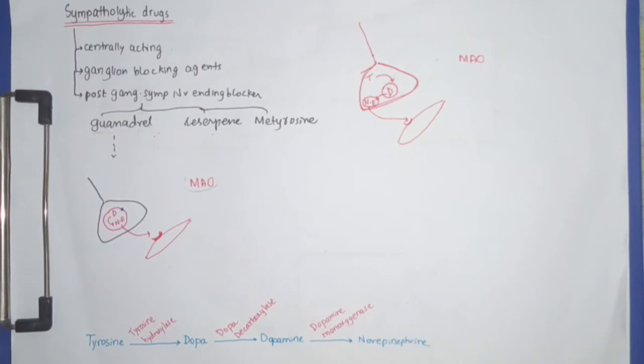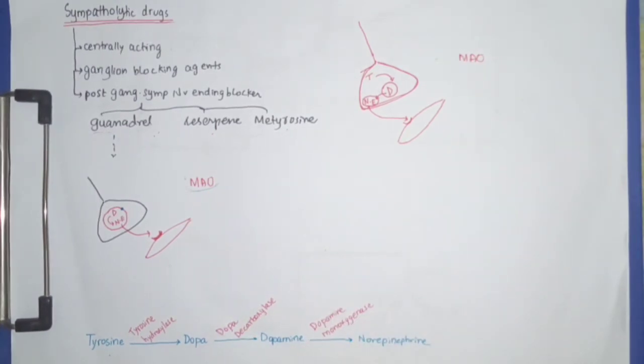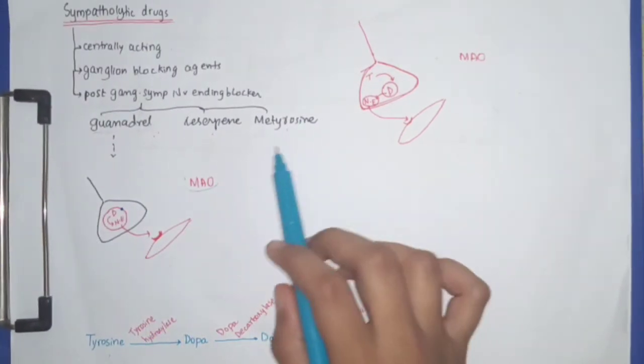was the side effect I mentioned. The next drug is metyrosine. Metyrosine basically resembles tyrosine. Tyrosine is converted into DOPA by tyrosine hydroxylase, so when metyrosine resembles tyrosine, enzymes get busy with that—they